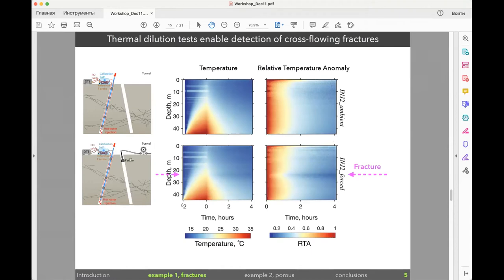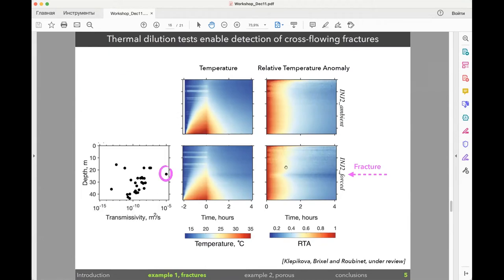Then we put this packer system. We pressurize the borehole up to four bars and what we can see is that here, it's exactly the same experiment, but here we see this zone of enhanced cooling which probably means that we have this flowing zone that connects two boreholes. Here on this relative temperature anomaly or normalized temperature. Then we verified this with independent measurements of transmissivity. We obtained a transmissivity profile from this borehole and indeed we can see at this depth of 24 meters that there is the most transmissive fracture, which is about 10^-5 meters squared per second.